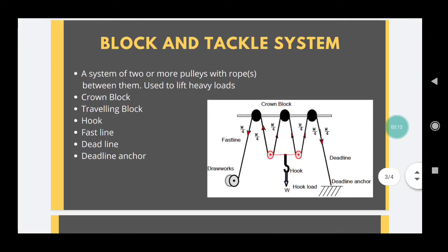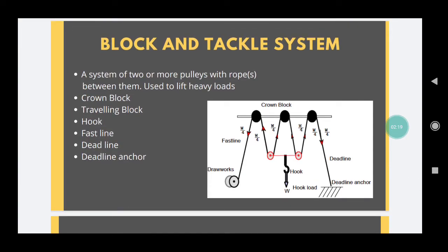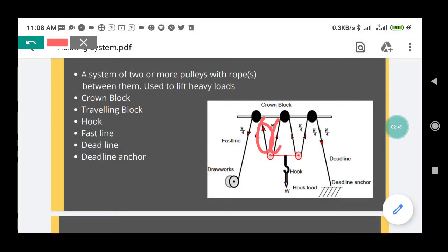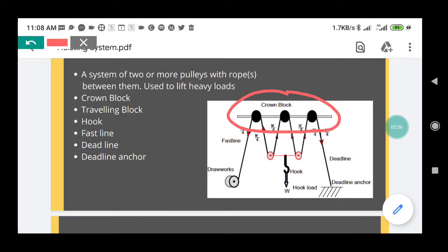In hoisting systems, the block and tackle system consists of a crown block, a traveling block, a hook, a fast line, and a deadline. The crown block and traveling block are frames consisting of multiple pulleys. The crown block is at the top of the derrick and the traveling block is below the crown block. Between the crown block and the traveling block there are multiple drilling lines — two, three, four of these drilling lines. This whole structure is known as the crown block, and this structure below is known as the traveling block.